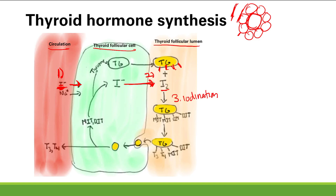One iodine residue added to thyroglobulin tyrosine makes MIT (monoiodotyrosine). Two iodines make DIT (diiodotyrosine). Step four is coupling of the MITs and DITs. MIT plus DIT — that's one plus two — gives you T3. Two DITs — two plus two — gives you T4.